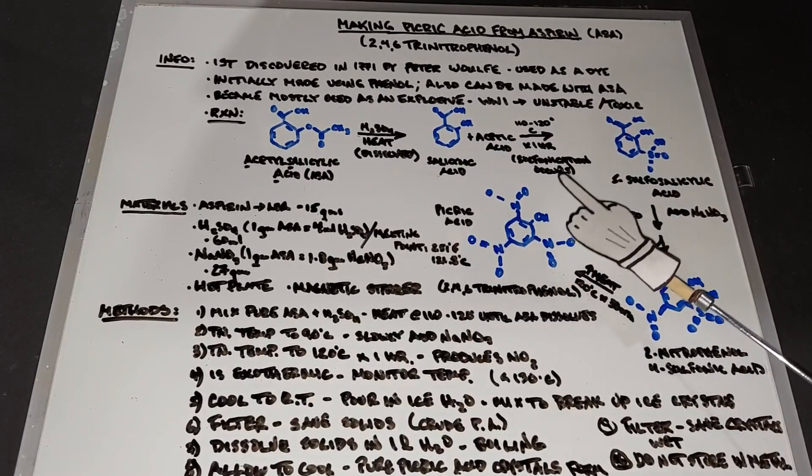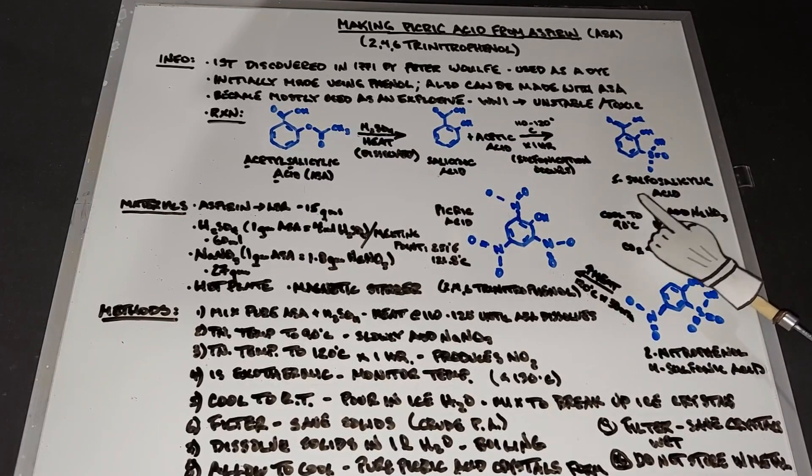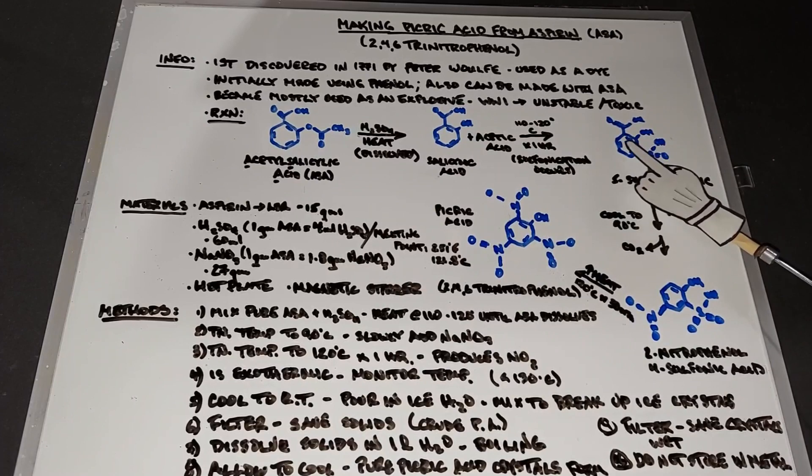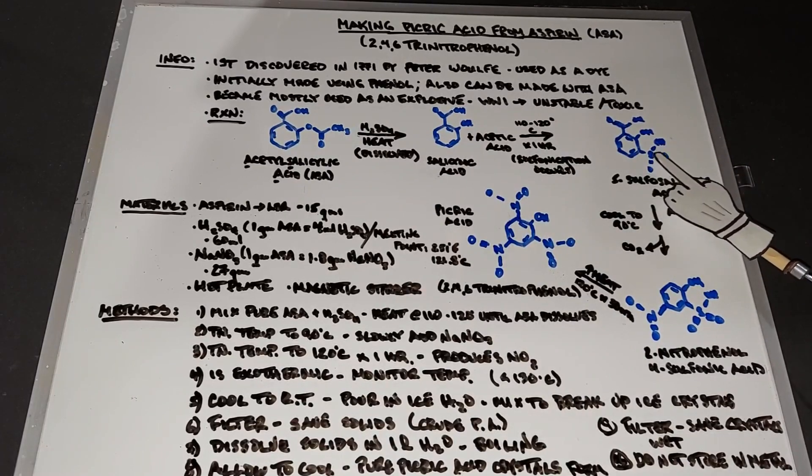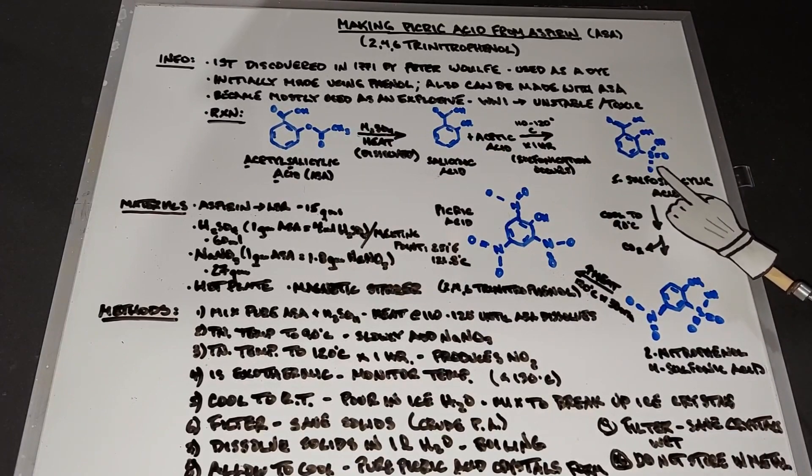At this point, sulfonication occurs, which eventually, when it's done after one hour, yields 5-sulfosalicylic acid. That's this right here, which is the benzene ring. We've added a sulfur down here, which there was none there, and an OH, an oxygen, and an oxygen, also not present back here.